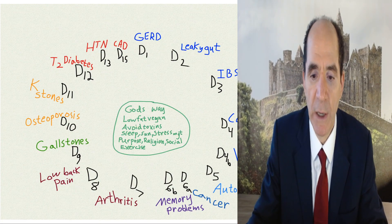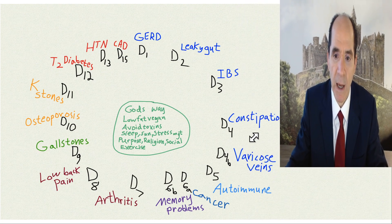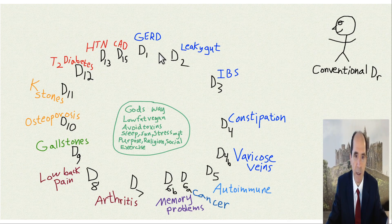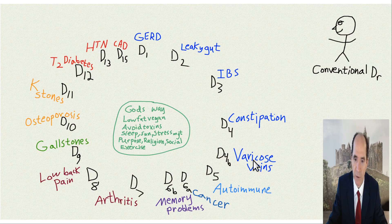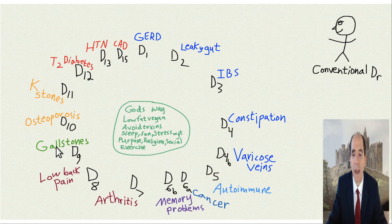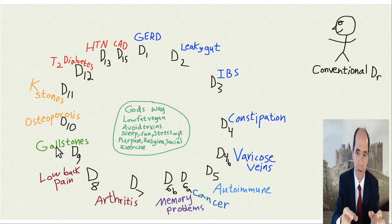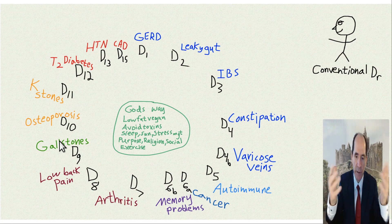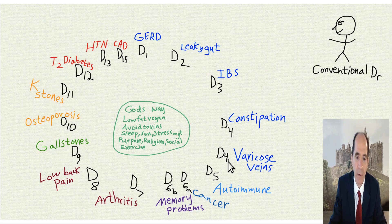In this video, we're going to add more information to this common mechanism concept. Here is how conventional medicine views the world: gastroesophageal reflux disease, leaky gut, irritable bowel syndrome, constipation, varicose veins — it sees these as all separate diseases. Autoimmune disease, cancer, memory problems, arthritis, low back pain. In conventional medicine, you match the ill to the pill and send a bill. That's what all medical students are taught in every single medical school.